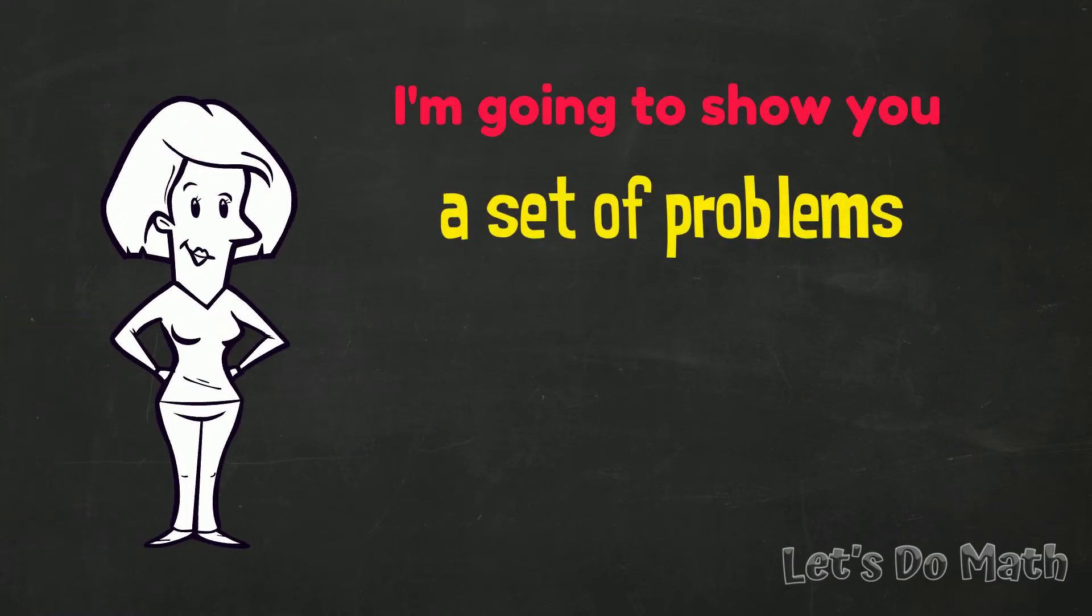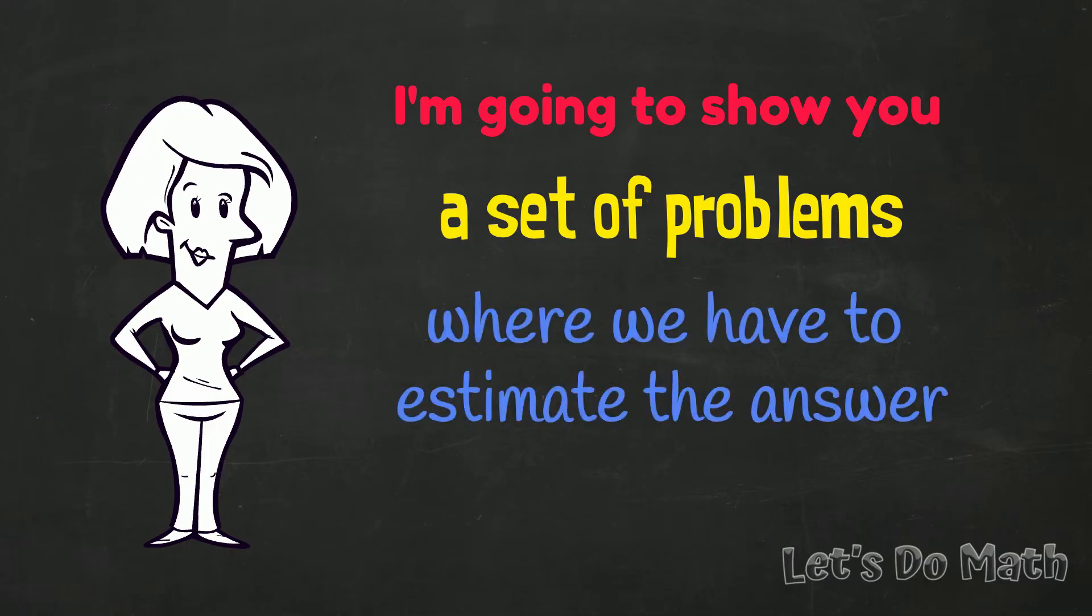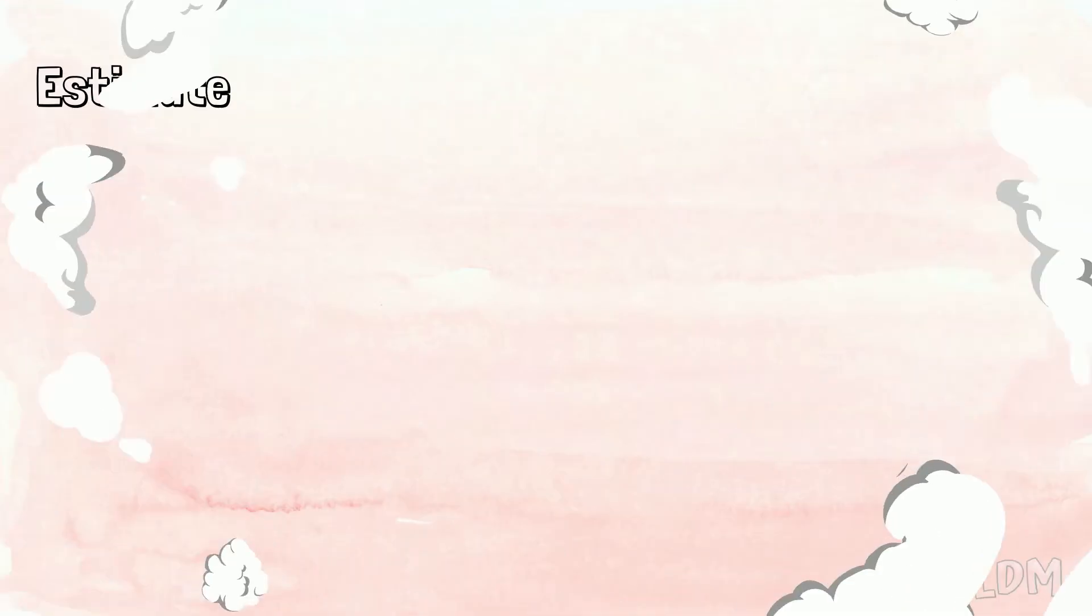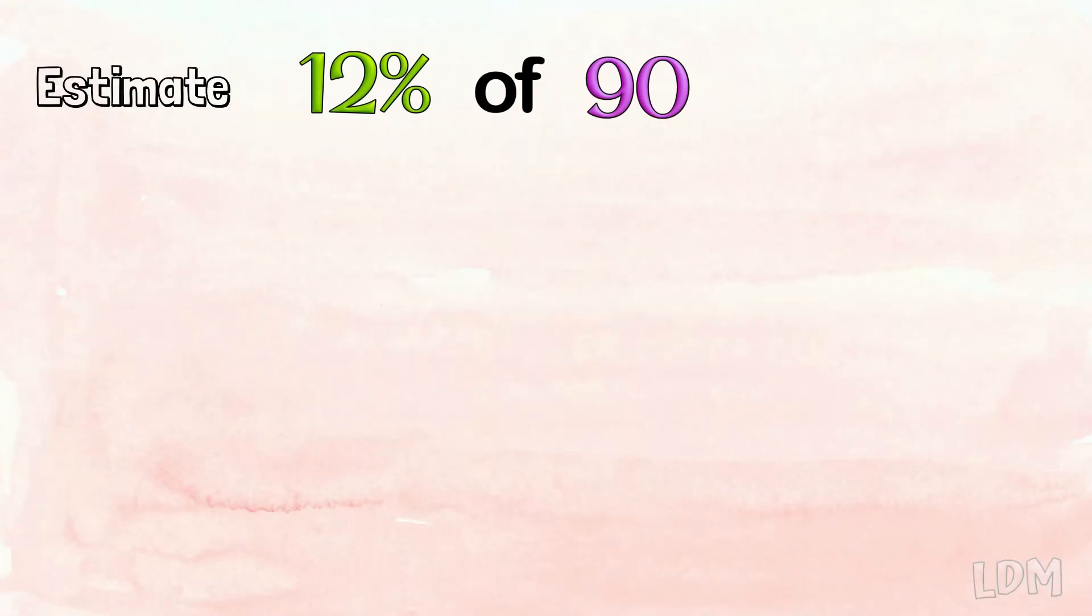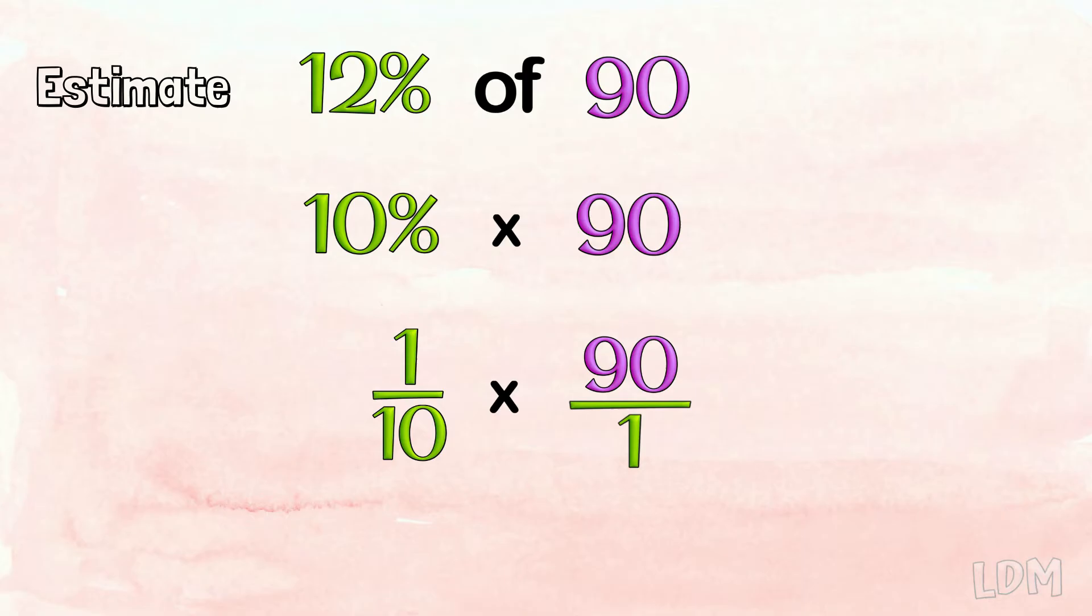I'm going to show you a set of problems now where we have to estimate the answer. This is a skill you need. 12% of 90. 90 is a round number. 12 rounds down to 10. 10% of 90 means 1 tenth of 90. 90 divided by 10 is 9.